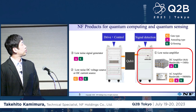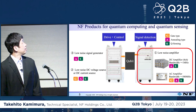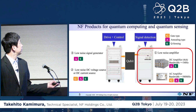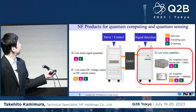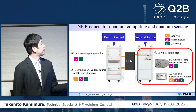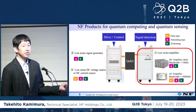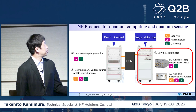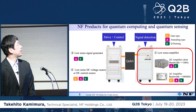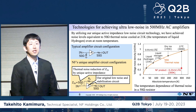I'd like to introduce the products from NF for quantum computers and quantum sensing. The first product is the low noise amp. The second one is the low noise DC voltage source and DC current source. The third one is a low noise signal generator. For the low noise amp, we have a high speed DC amp and high speed AC amp. Today I'd like to talk about the AC amp. The AC amp can be used for gate type, annealing type, and quantum sensing.